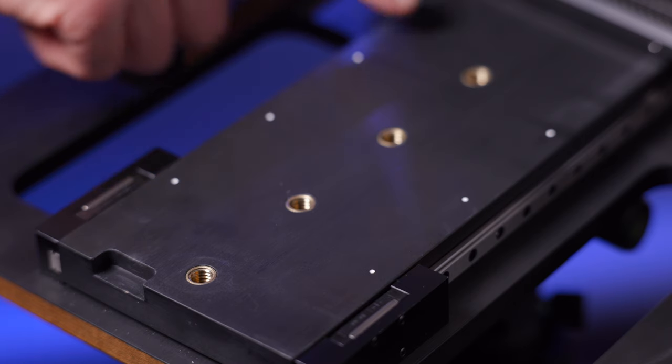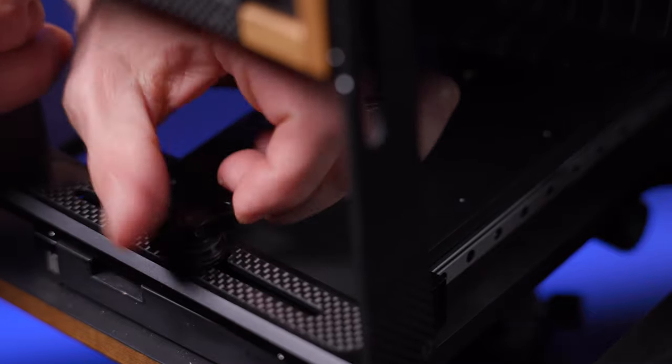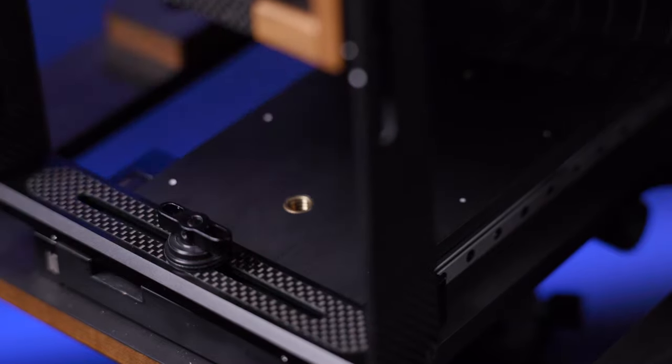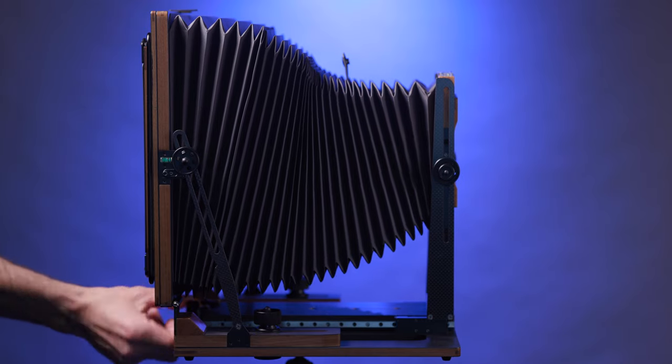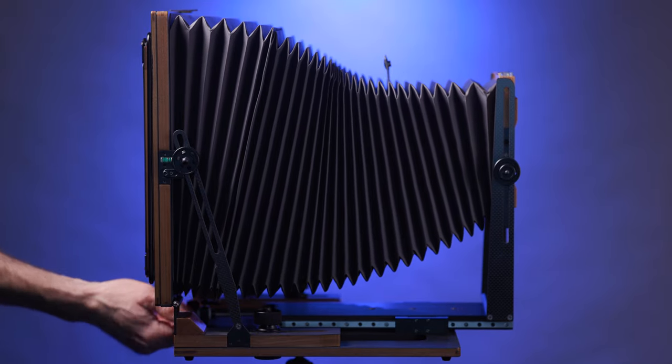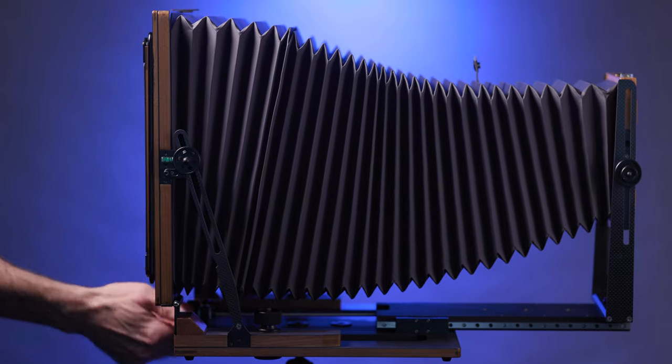Secure the front standard to the base of the camera by threading the swing/shift screw into one of the four dedicated holes. I used the thread closest to the rear standard for my 150mm lens, the second from the front for my 300mm lens, and the front most thread for my 450mm lens. The thread positioning helps minimize the amount that the focusing bed has to be racked, which can save time.